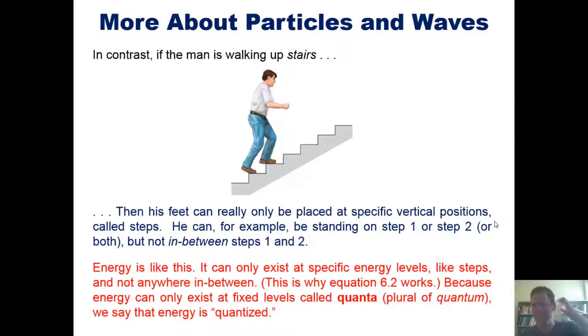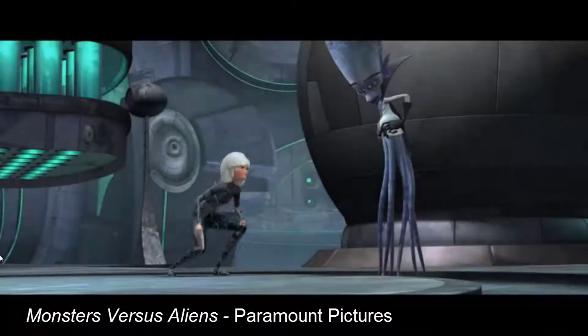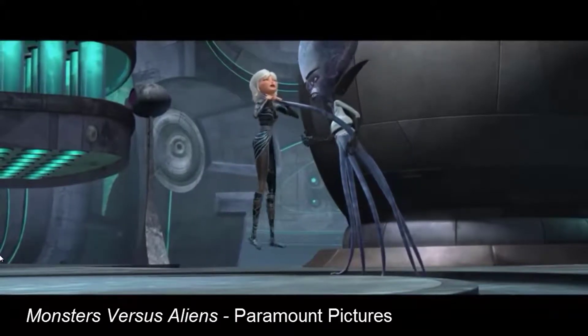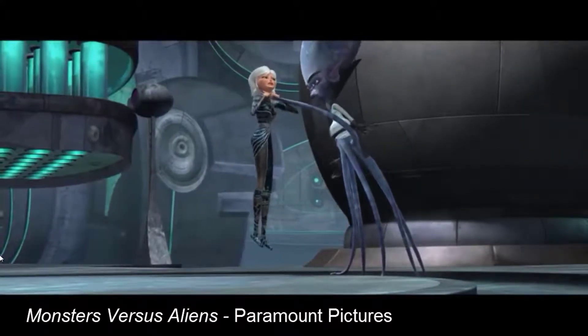So once again, if you're walking along a ramp, you could technically be at any vertical position, but along steps you can't be because you can't exist at a level that's between step one or step two unless you have the ability to float or something. So energy is kind of like this. It can only exist at specific energy levels like steps and not anywhere in between. This is why equation 6.2 works. Because energy can only exist at fixed levels, which we call quanta, the plural of quantum, we can say that energy is quantized.